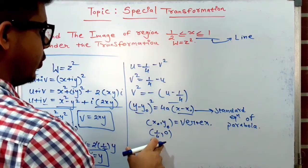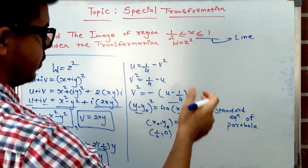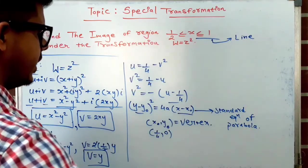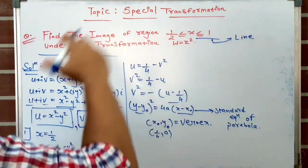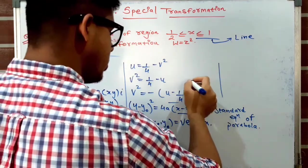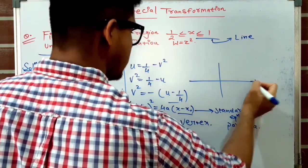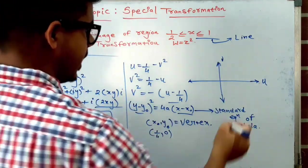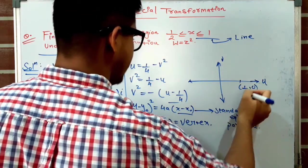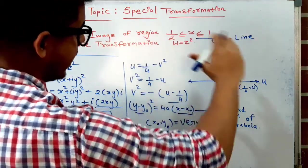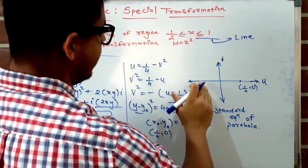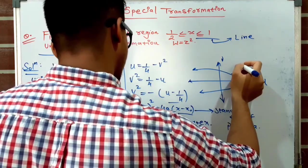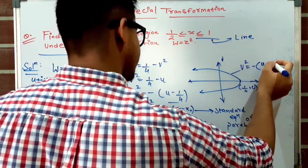We obtained the vertex at (1/4, 0) and the equation v² = −(u − 1/4), so this parabola faces the negative u-axis — that is, towards the left. In the u-v plane, marking the vertex at (1/4, 0), the parabola opens to the left.